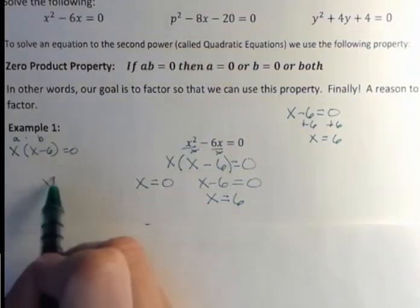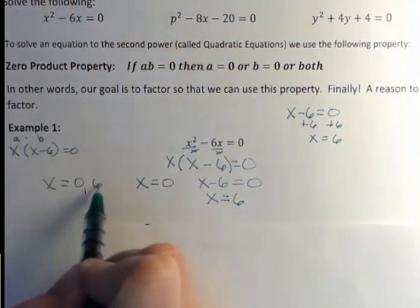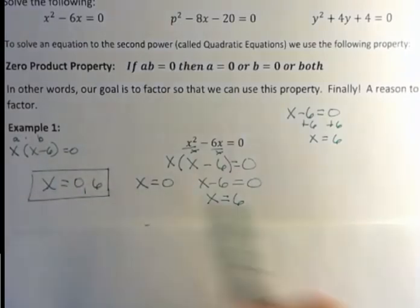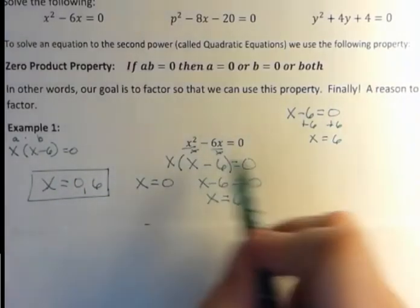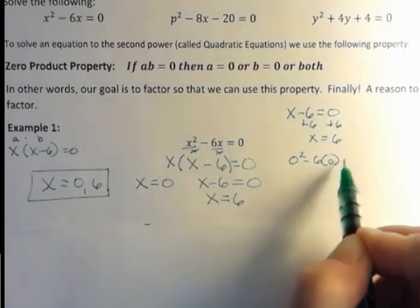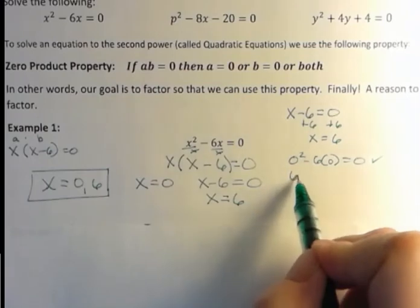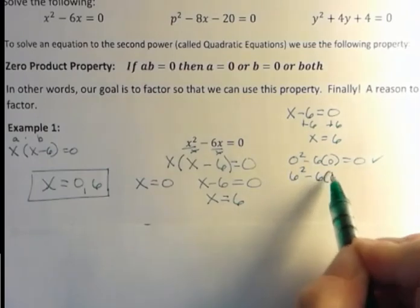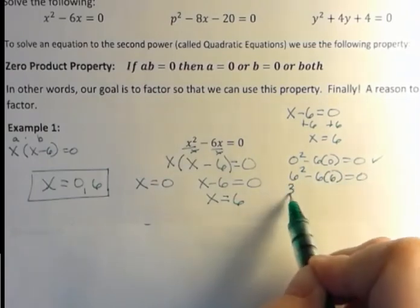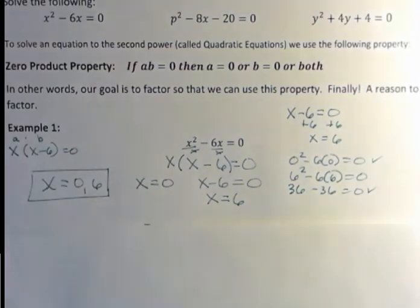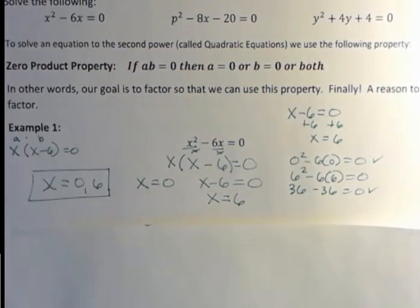So x equals zero and 6. Two different solutions. Is it true? Do they both actually work? Well, let's plug in zero. Zero squared minus six times zero, that's definitely zero. What about six? Six squared minus six times six, does that equal zero? Well, that's 36 minus 36, which, yes, it does. So both of those work, zero and six.